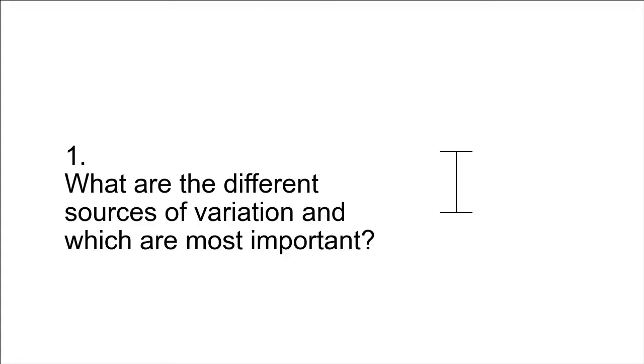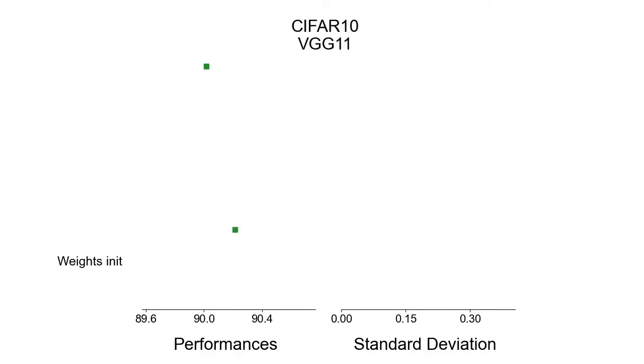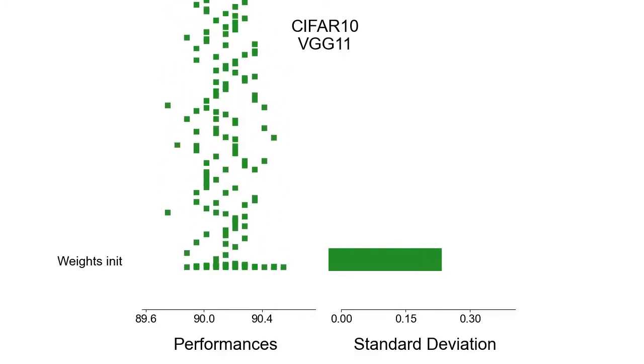Question 1: What are the different sources of variation and which are the most important? The most common source of variation reported in the literature is the random initialization of neural network weights. We will train a VGG-11 on CIFAR-10 and randomly vary weight initialization at each training. Each block falling represents the performance of a trained VGG with a random initialization. We train 200 models, and the blocks stack above each other showing the distribution of performances with a corresponding standard deviation shown as a bar plot on the right.